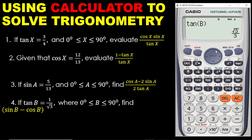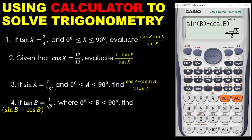Our data entered is correct. The question says find sin B minus cos B. Press sin, then alpha and B, close the bracket, then minus cos B: press cos, then alpha and B, close the bracket, press equal to. When you solve this, this is what you get. It is so easy to use your calculator to solve questions involving trig ratios.